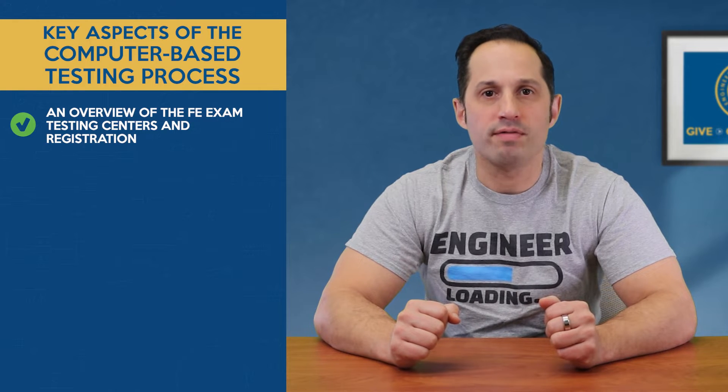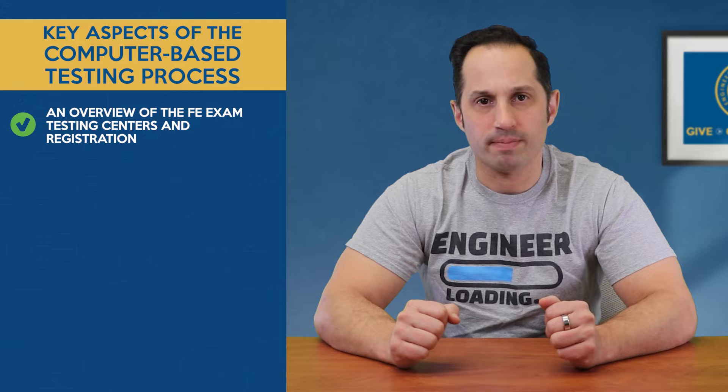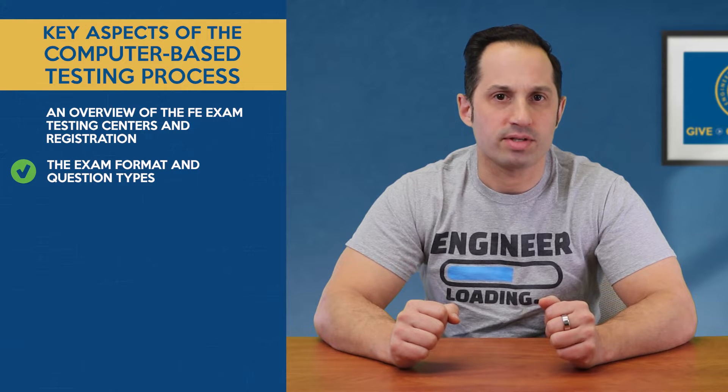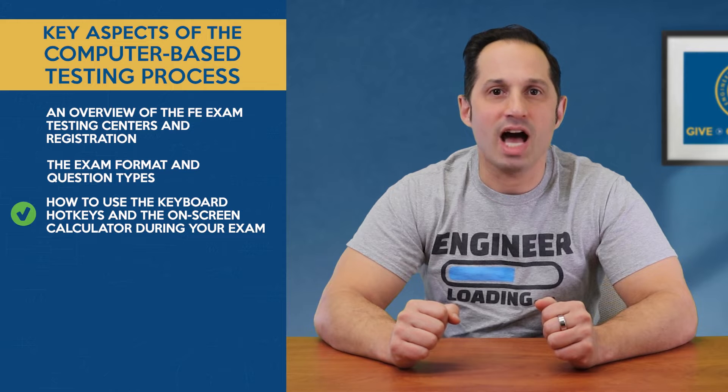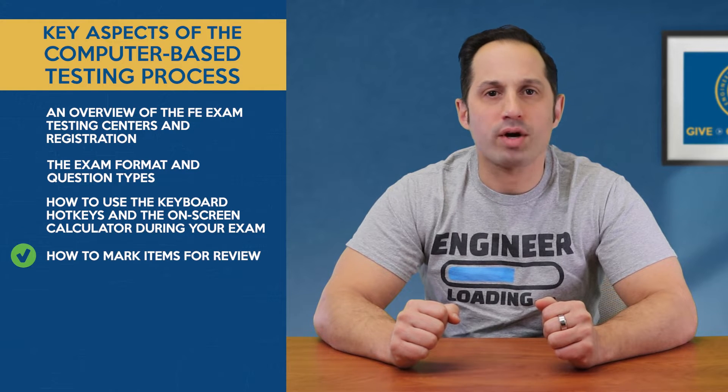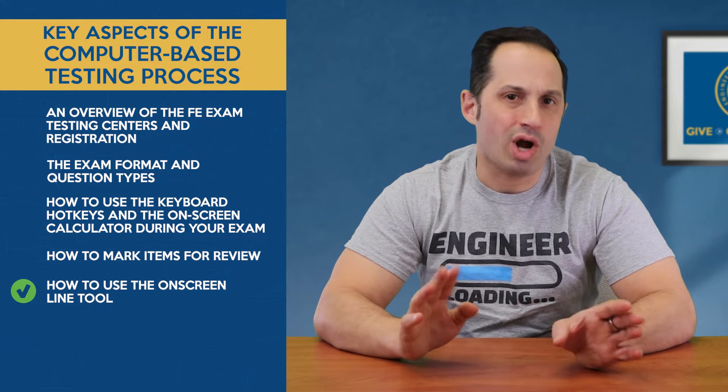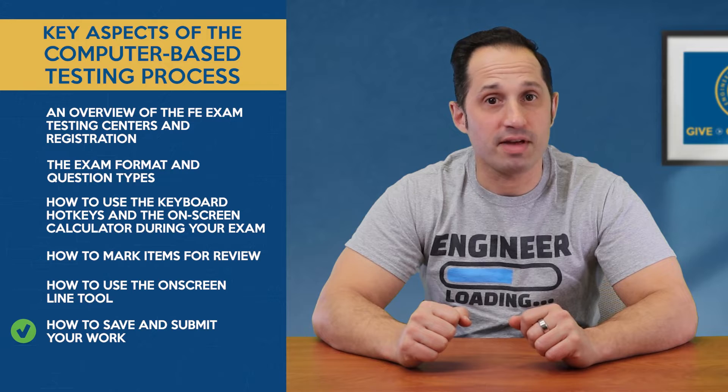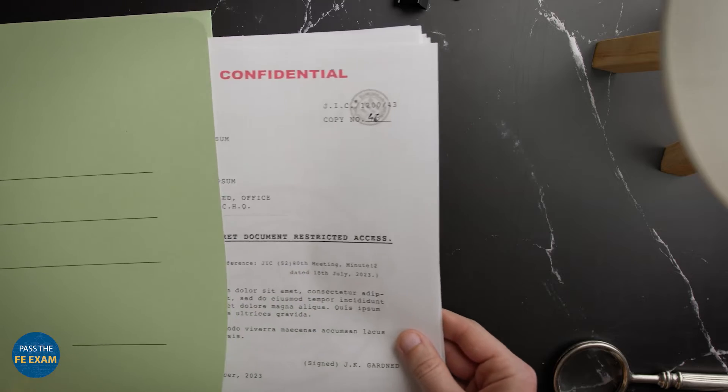I'm going to cover an overview of the FE exam testing centers and registration, the exam format and question types, how to use the keyboard hotkeys and the on-screen calculator during your exam, how to mark up items for review, how to use the on-screen search tool, and also how to save and submit your work. The FE exam is a critical milestone for aspiring engineers, designed for recent graduates or students near the completion of their undergraduate engineering degree. The exam includes 110 questions with a total duration of six hours, including various segments like a non-disclosure agreement, a tutorial phase, the main exam, and a scheduled break.